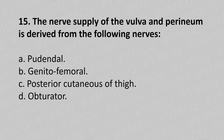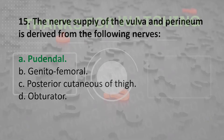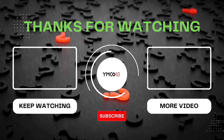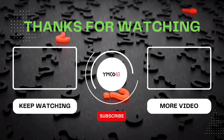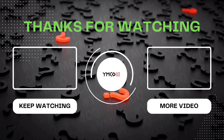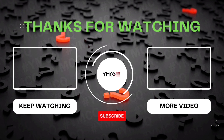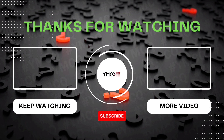Question 15 options included: option A: pudendal, option B: genitofemoral, option C: posterior cutaneous nerve of the thigh, option D: obturator nerve. In the next few days we'll be back with another MCQ session, so do subscribe to this channel. Thank you.